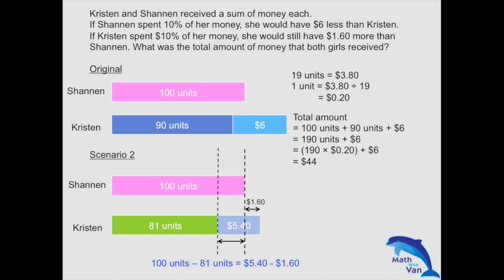The total amount of money that both girls had originally is 100 units plus 90 units plus $6. Since we have found that 1 unit equals $0.20, the total sum comes to $44 — and that's your answer. So remember with double-if questions: the first 'if' tells you how the amounts are related, and the second 'if' is for solving the units.